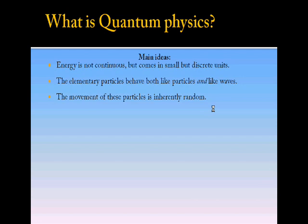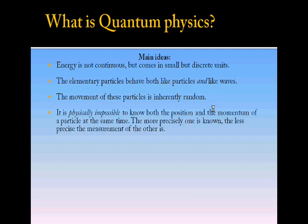The movement of these particles is inherently random. That means it is physically impossible to know both the position and momentum of a particle at the same time. The more precisely one is known, the less precise the measurement of the other is.